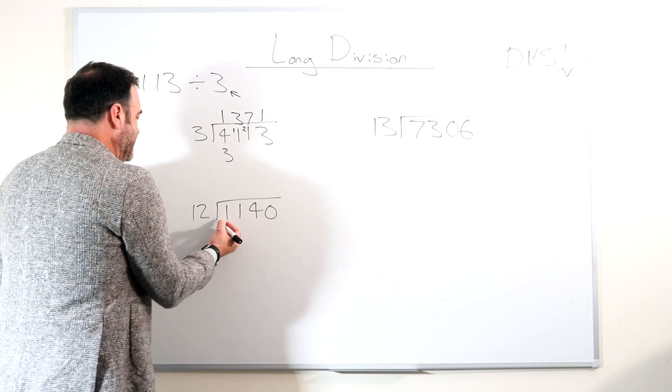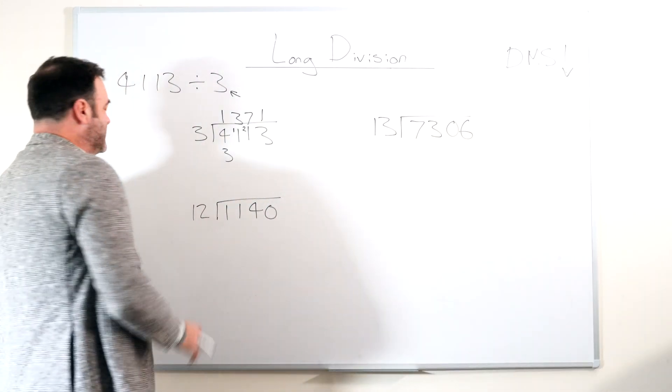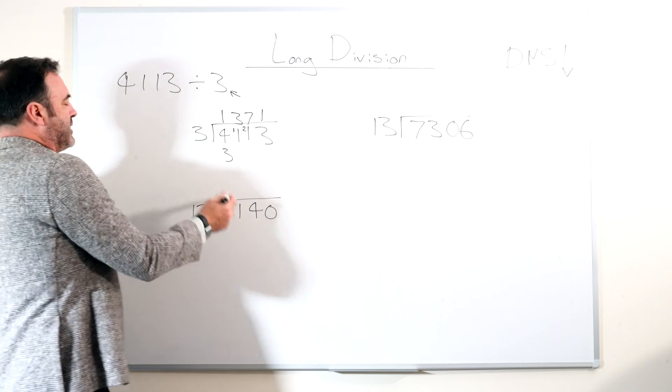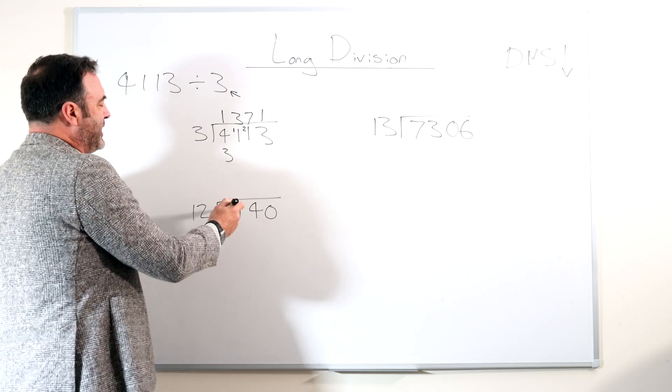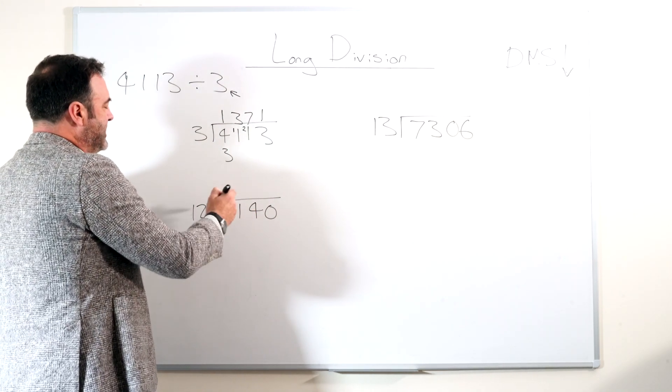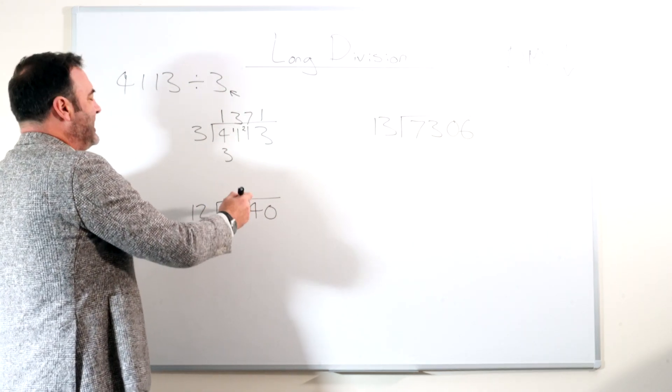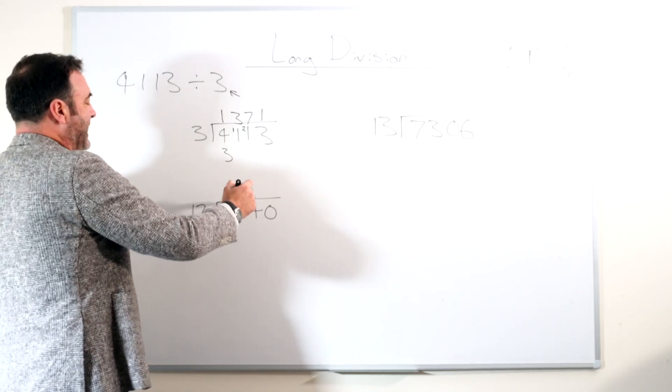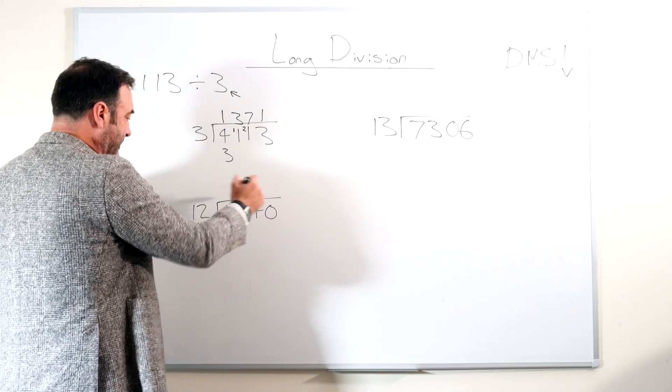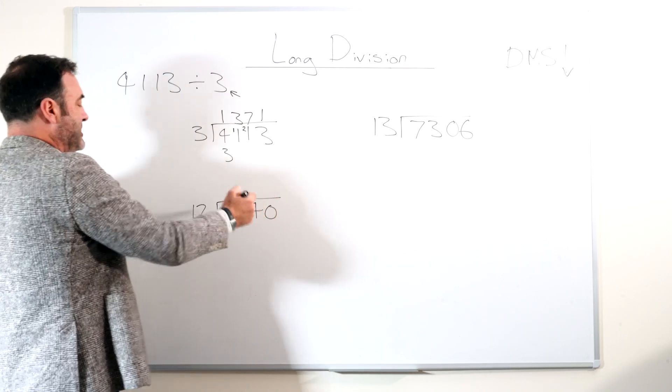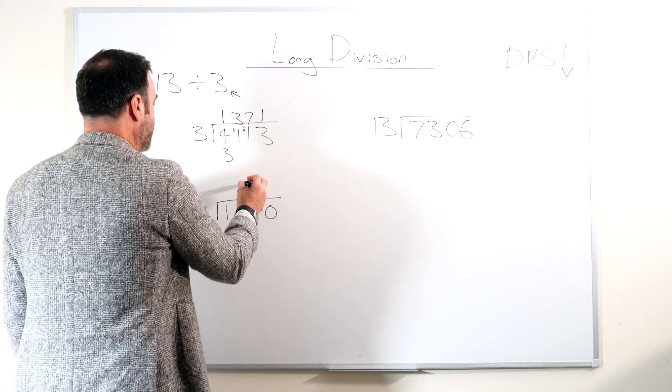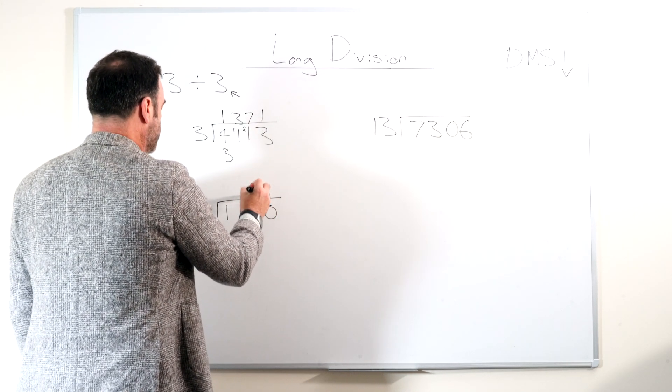Some kids get freaked out by double digits. It's the same process, exactly the same. How many times will 12 go into 1? It doesn't go. So we carry the 1. How many times does it go into 11? It doesn't go. So we carry the 11. So it becomes 114. We keep carrying. How many times can we go into that? Now, 9 times 12 is 108.